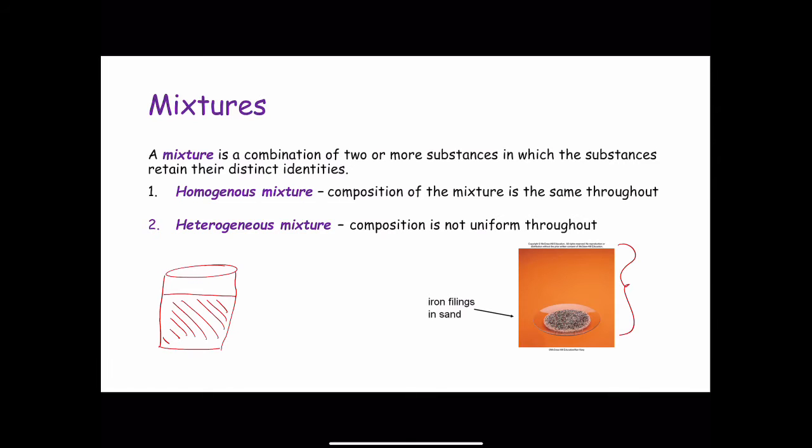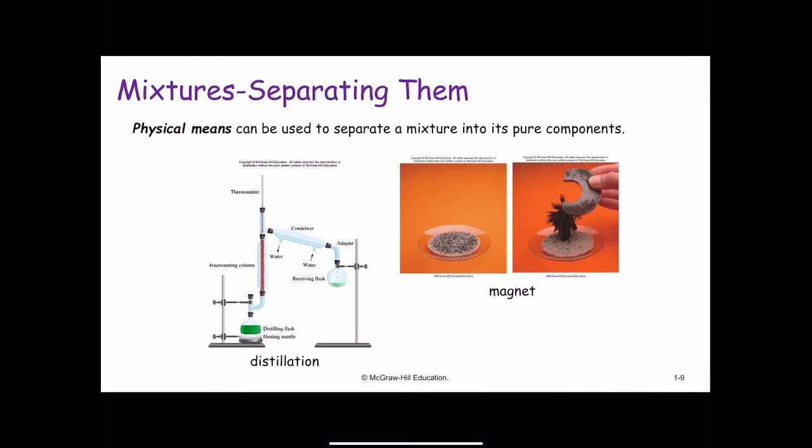Any mixture, whether heterogeneous or homogeneous, can be created and then separated by physical means into pure components without changing the identities of those components. Thus, the sugar or Kool-Aid could be recovered from the water solution by heating it and evaporating it to dryness, leaving the Kool-Aid crystals. Condensing the vapor will give us back the water component. To separate the iron-sand mixture, we can use a magnet to remove the iron filings from the sand because sand is not magnetic. After separation, the components will have the same composition and properties as they did when we started.